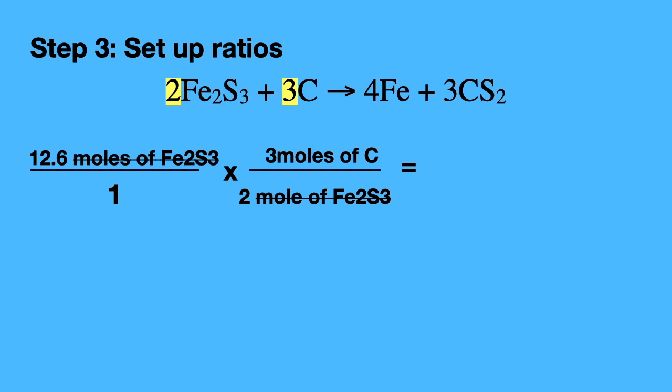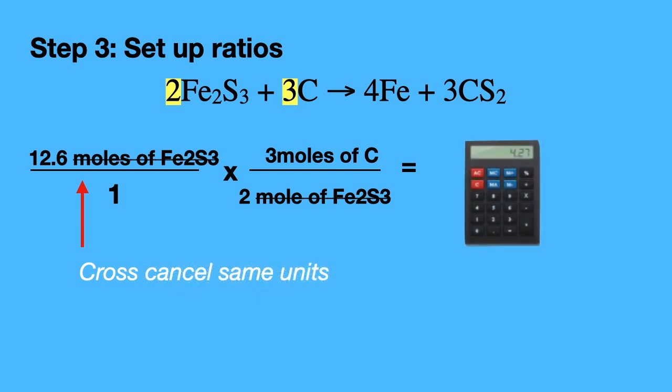Always remember to cross cancel the same units. We have moles of Fe2S3 at the top so we can cross cancel it with the bottom units, moles of Fe2S3. If you are on track with getting the answer you should always end up with the units you are looking for, which in this case we are looking for moles of carbon.